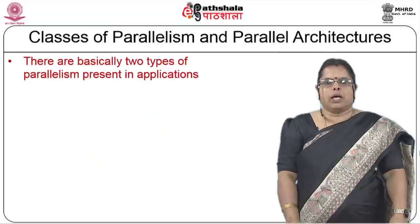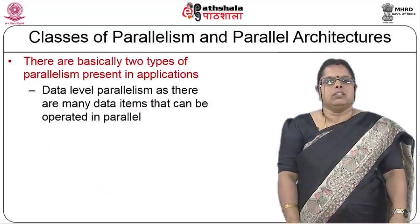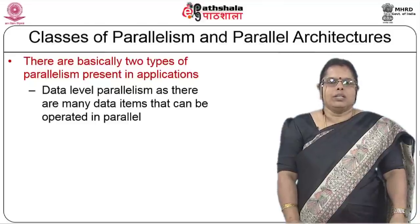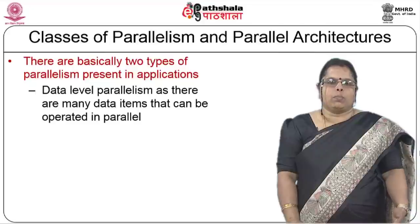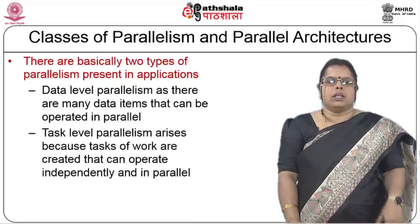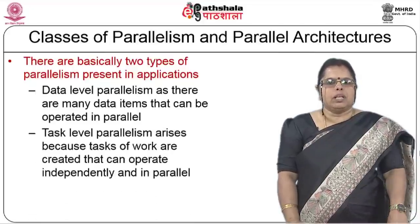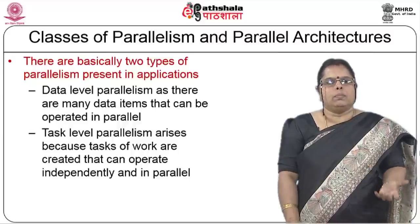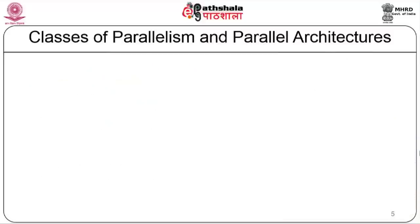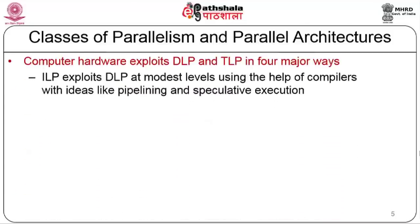Looking at the various classes of parallelism and parallel architectures, there are basically two types of parallelism present in applications. One is data level parallelism, where many data items can be operated in parallel. The other is task level parallelism, which arises because tasks of work are created and can be operated independently and in parallel. Computer hardware tries to exploit these parallelisms.